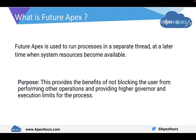First, let's understand what is Future Apex. Future Apex is used to run processes in a separate thread at a later time when system resources become available. Future methods are a type of asynchronous Apex which runs in the background whenever resources become available. The purpose of a future method is to provide the benefit of not blocking the user from performing other operations and providing higher governance and execution limits for the processes.